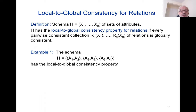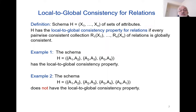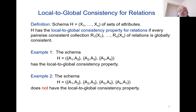Let's look at a couple of examples. Here is a schema with three sets of attributes: {a1,a2}, {a2,a3}, {a3,a4}. It's easy to see that this has the local-to-global consistency property. On the other hand, if we take this schema and add {a4,a1}, giving {a1,a2}, {a2,a3}, {a3,a4}, {a4,a1}, this does not have the local-to-global consistency property. So we would like to understand what is the difference between these two schemas.